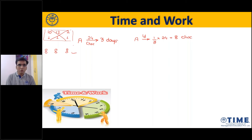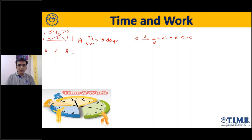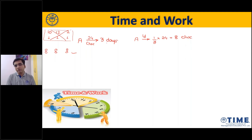Understood this? So don't bring this doubt in your mind. Per day work, you always have to take as constant. The question will never explicitly say that per day work is the same — you have to assume it. So when I said 24 chocolates in 3 days, for the per-day chocolates you do one-third.